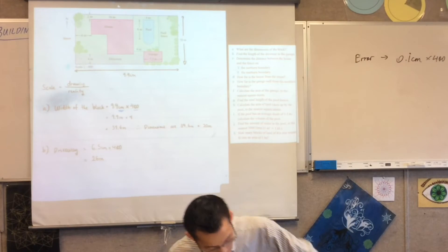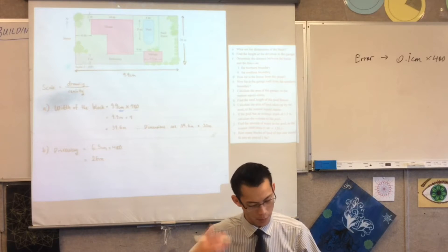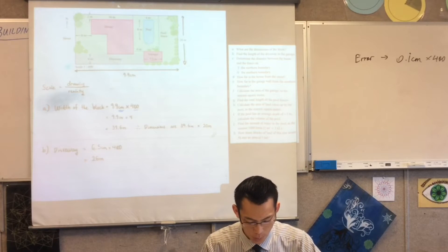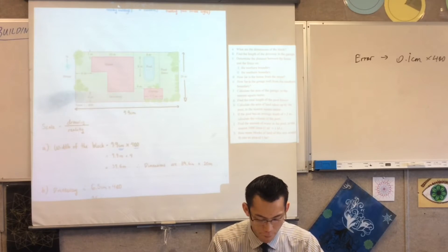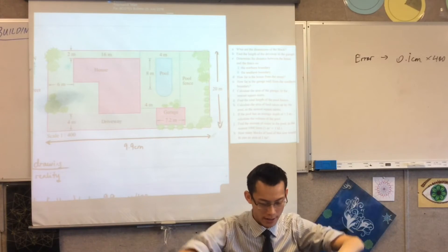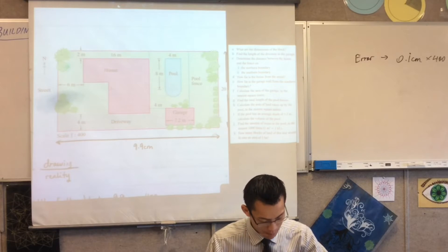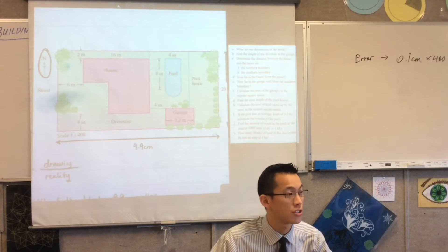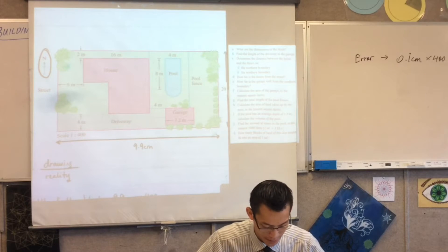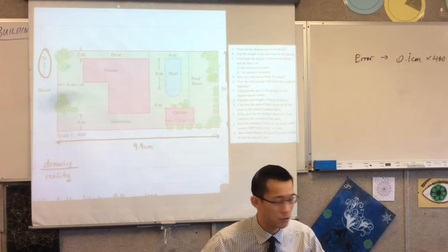Right let's keep going, we've got some more measurements to do. Part C says determine the distance between the house and the fence on the northern boundary and on the southern boundary. Now they actually have given you these distances, look carefully, you don't have to measure these with a ruler.